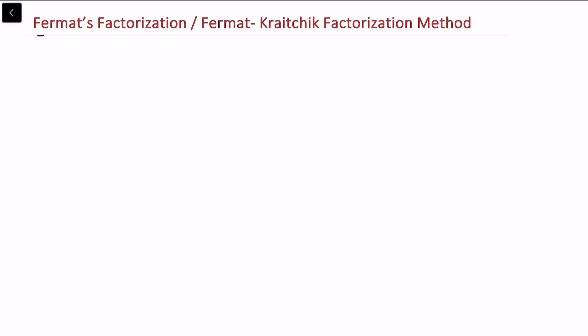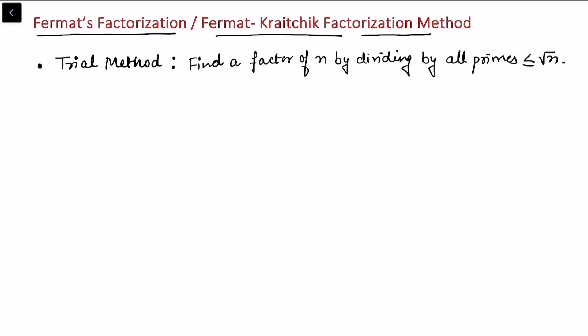In this video we'll be talking about Fermat's factorization method, specifically Fermat's Crotchkes vectorization method. This is the first improvement from the trial version. In the trial method, or from the Sieve of Eratosthenes method output, we see that to find a factor of n we divide by all the primes which are less than or equal to root n.